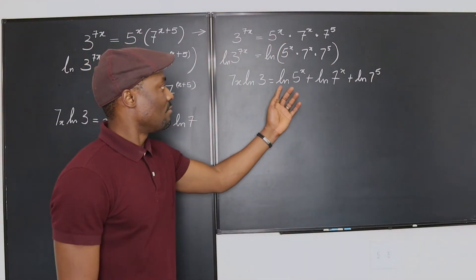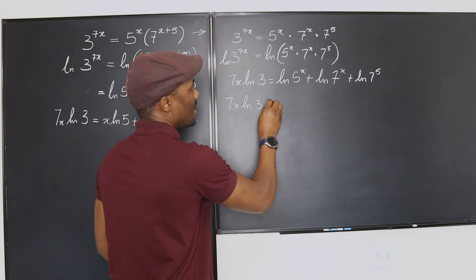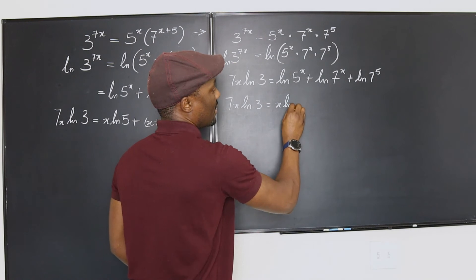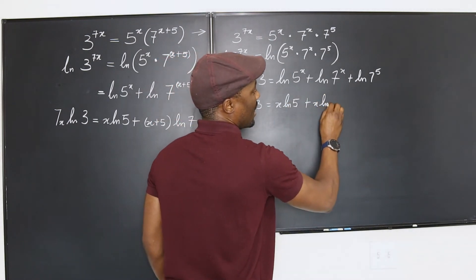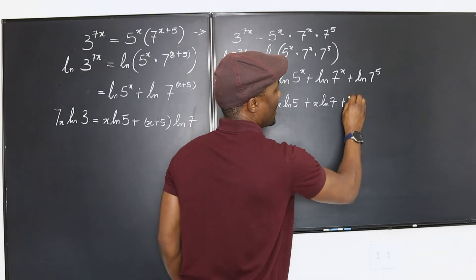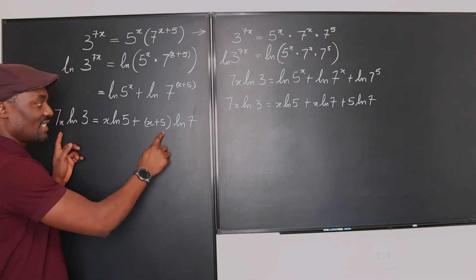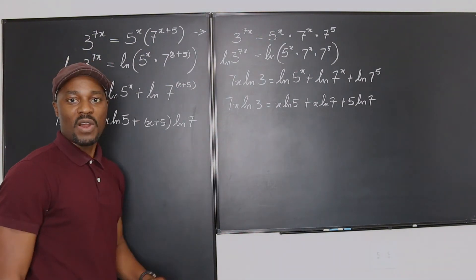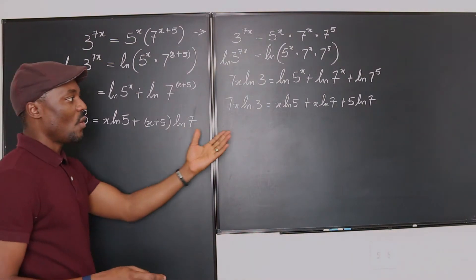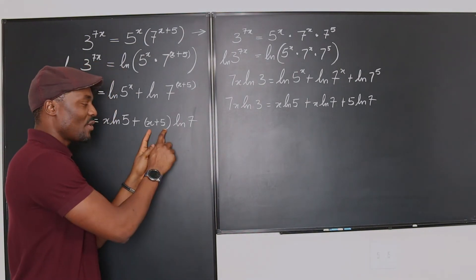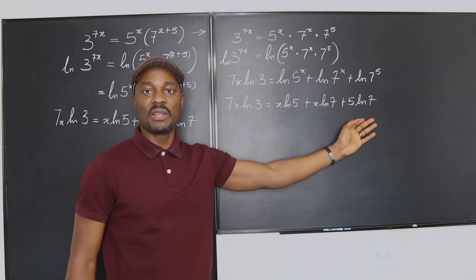So, you can now bring this all down and say this is 7x ln 3 equals x ln 5 plus x ln 7 plus 5 ln 7. So, now I can open this up. You can see the only thing that's different is that I don't have this problem. But if I distribute this, I'm going to end up with this expression.